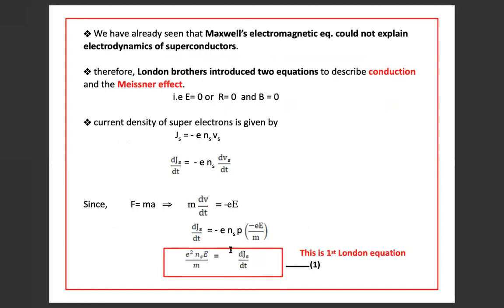We have already seen that Maxwell's electromagnetic equations could not explain the electrodynamics of superconductors. Therefore, London brothers introduced two equations to describe conduction and the Meissner effect. Conduction means E equal to 0 or R equal to 0. Meissner effect means perfect diamagnetism in the superconducting state, that is B equal to 0.